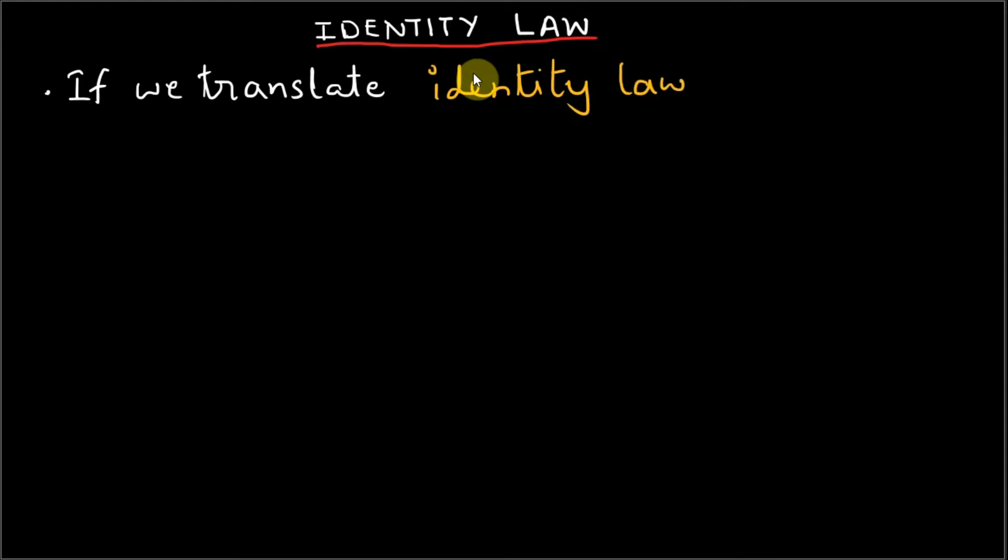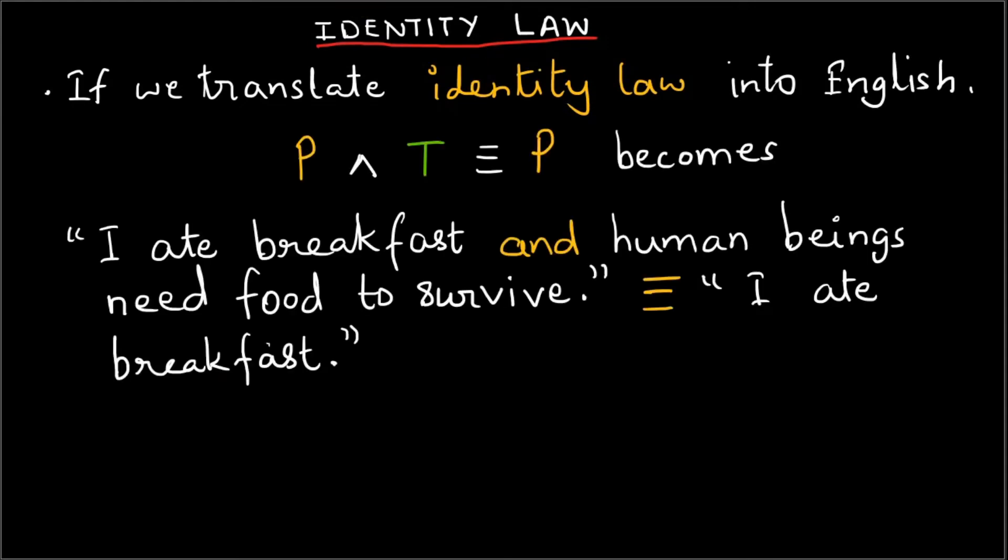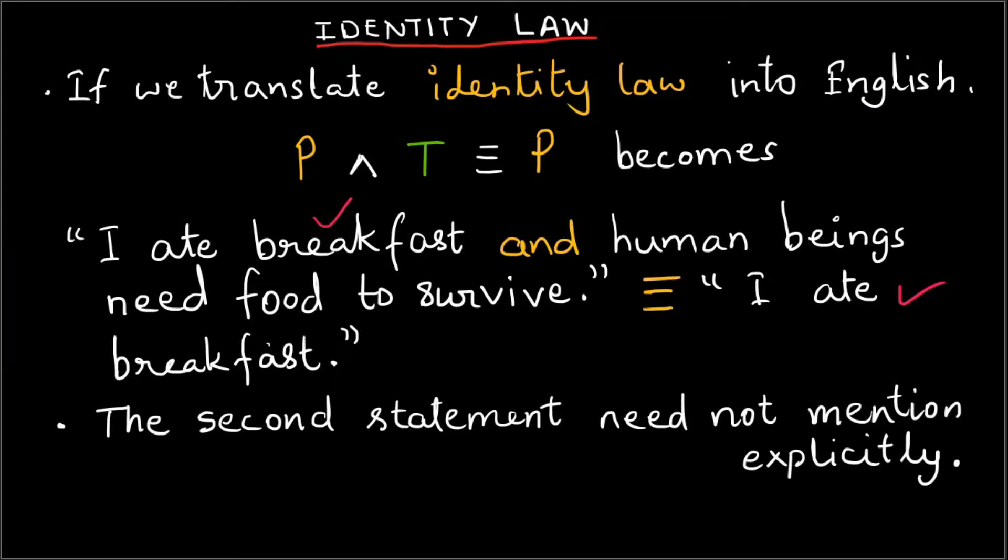If we translate the identity law into English, P and true equivalent to P becomes 'I ate breakfast and a human being needs food to survive' is equivalent to saying 'I ate breakfast'. The second statement does not need to be mentioned explicitly. It is always going to be true, therefore the equivalence is true regardless of the second statement.